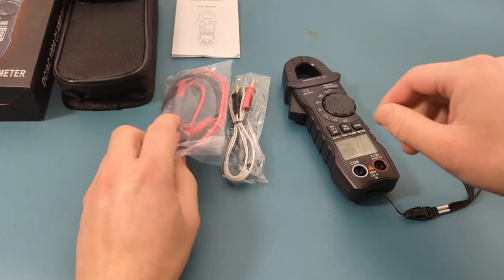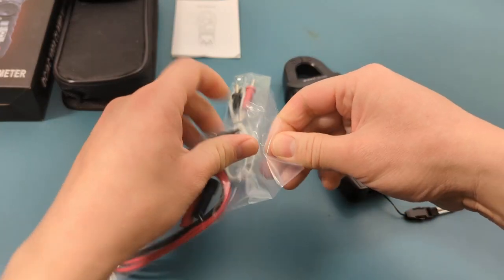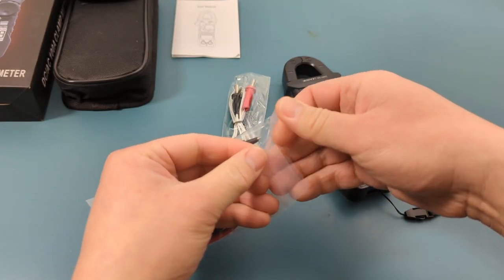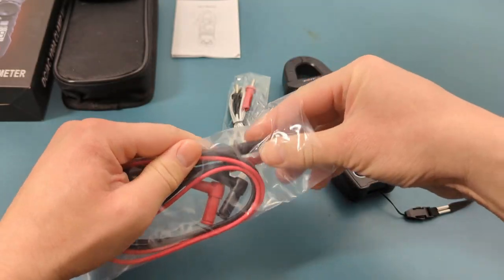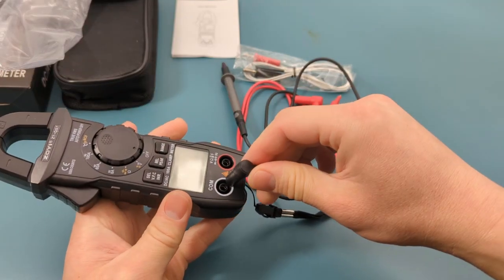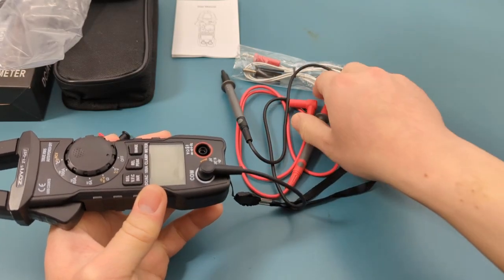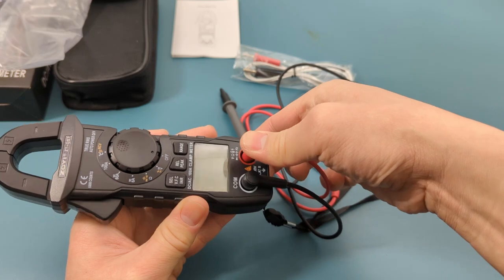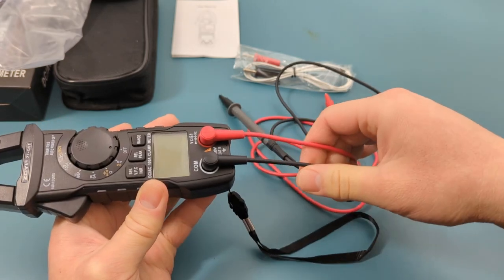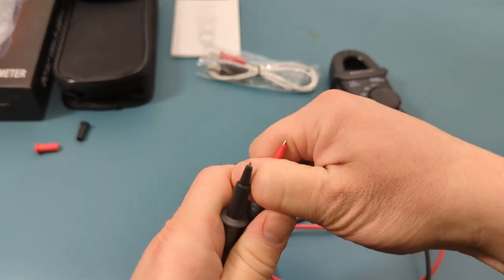The meter comes with red and black probe leads. Attach the black probe to the COM port. Attach the red probe to the voltage resistance continuity probe. The probe leads come with a protective cap. Remove the protective cap from the probe leads.